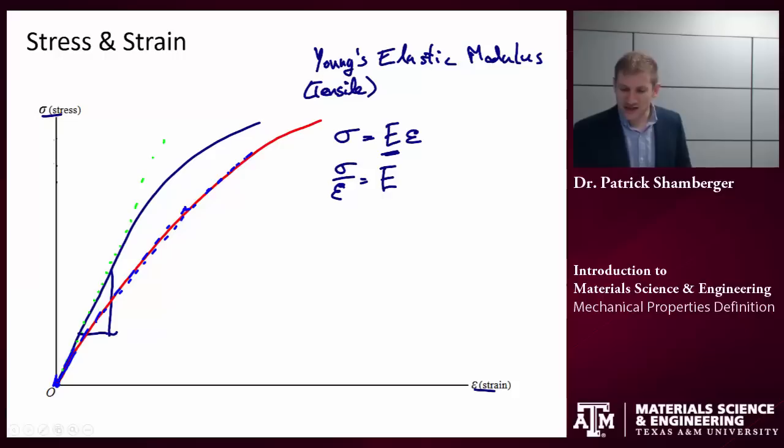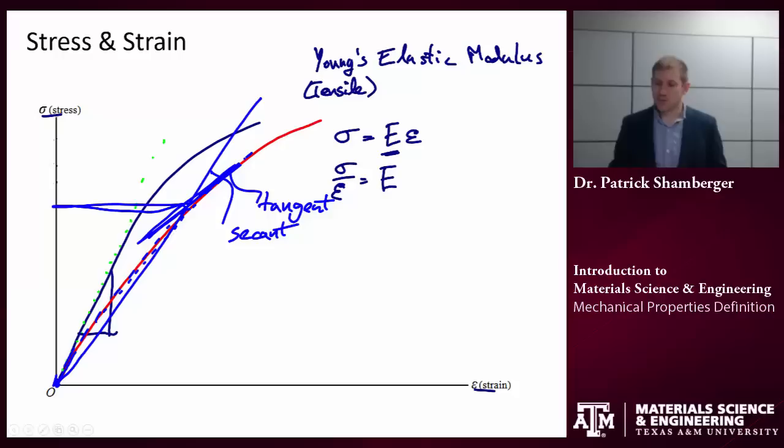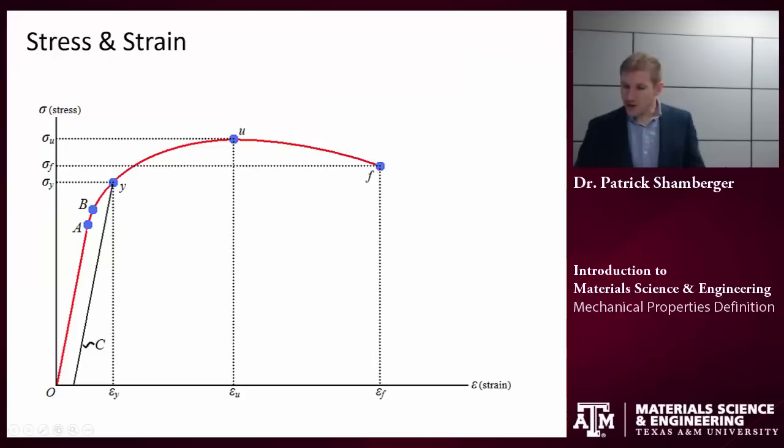There are two different things we can do. We can draw a line from, say I want the elastic modulus at this point. I could draw a line from the origin through that point, and that's what we would call the secant elastic modulus. Or I could look at the specific slope of that line at that point, and that's what I would call the tangent elastic modulus. So, again, nature isn't perfect. We try and make it perfect by our models. But these are the terminologies that you would need to know to discuss elastic behavior in materials.